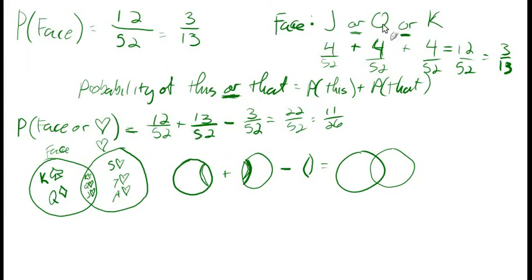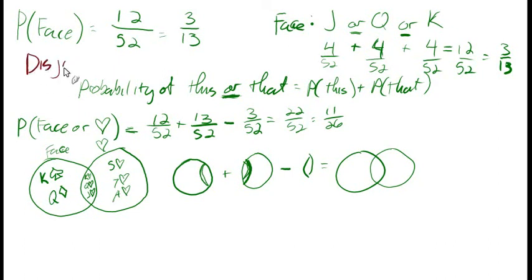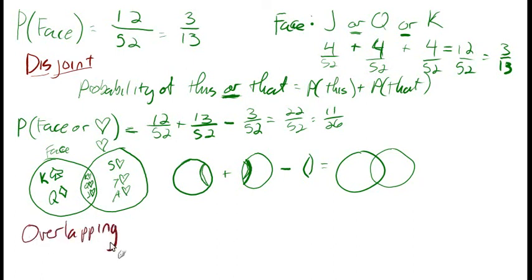In the face card example, a face card is jack or queen or king — you can't have a jack and a queen at the same time on the same card, so none of these intersect. If we drew a diagram, they wouldn't overlap at all. This is what we call disjoint — it's not joint, it's disjoint. But with face cards and heart cards, we find an overlap. So those are called overlapping events.